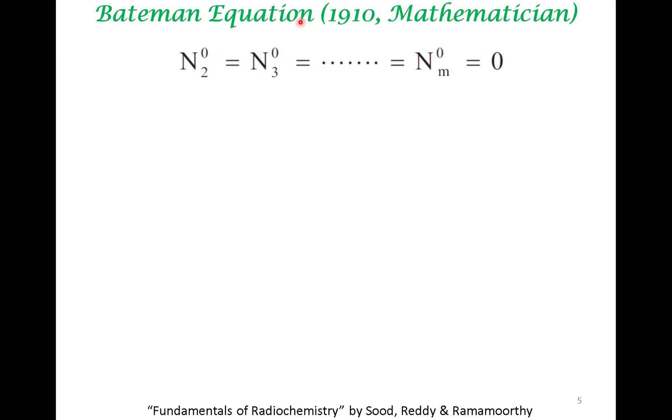So what is the condition? The condition is that if you have n1 going to n2, n2 going to n3, n3 going to n4, all the way to m, element m, he gave a general expression. So the general expression for this condition, in the beginning, all you had was element number one. The amount of that element was N1 naught. And then all the rest were equated to zero. And then, so if you want Nm at any particular time t, you can express Nm.